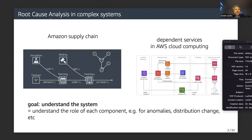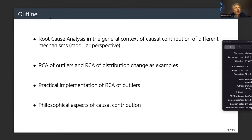You can think of several complex systems in the real world, like Amazon's supply chain or dependent servers in AWS cloud computing. The goal is to understand the system — specifically the role of each component — for instance for anomalies, distribution change, or whatsoever. For example, an on-hand inventory level planning system with forecasted demand, where you want to understand anomalies or distribution shifts.